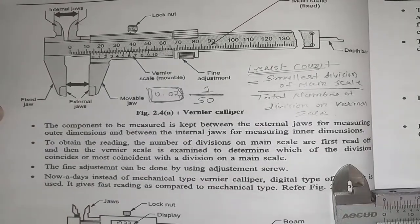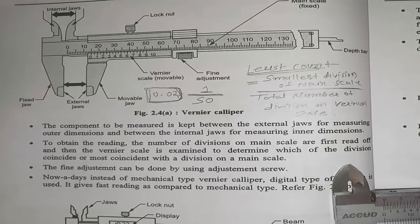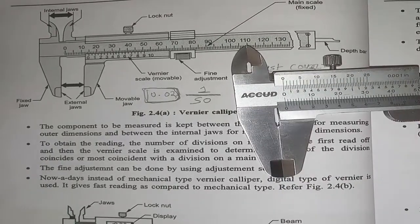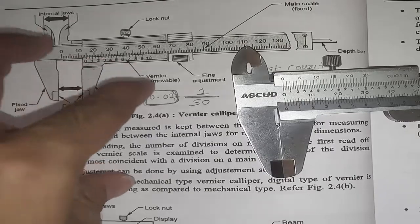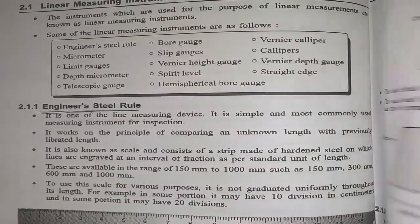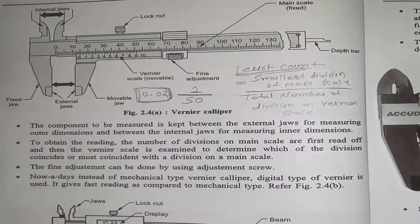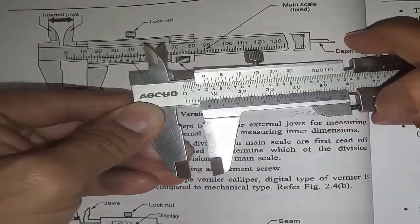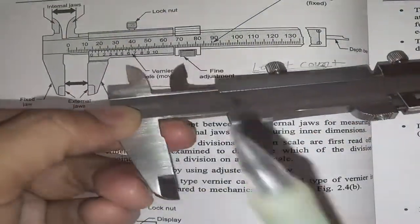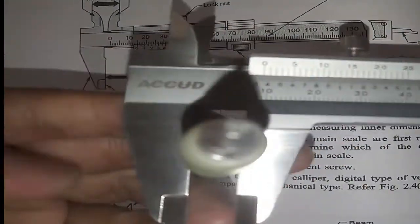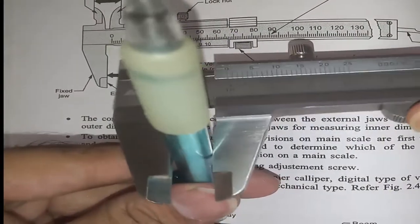The least count of the vernier caliper is 0.02 mm. Now let us understand how to take a measurement. In an exam, you can write the answer in your own words — it is not necessary to write exactly as given here. As a demonstration, suppose we want to measure the diameter of this pen. We adjust the jaws around the object and lock it in place.